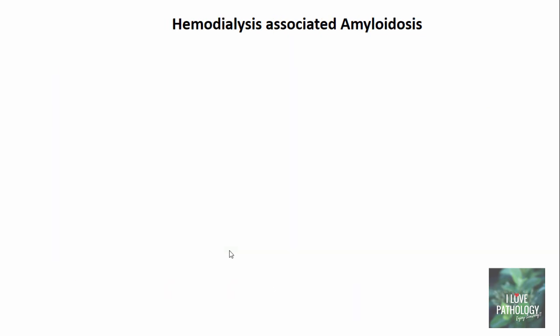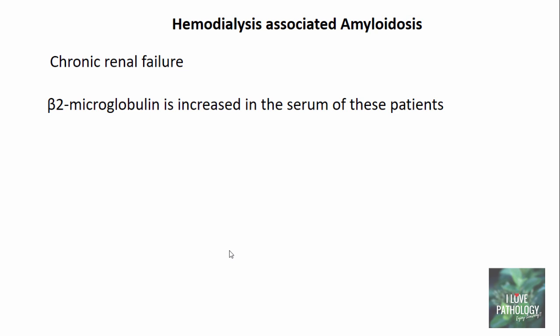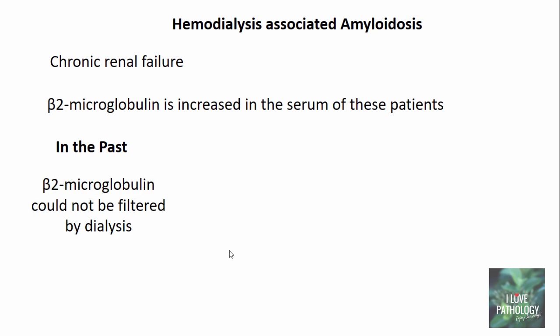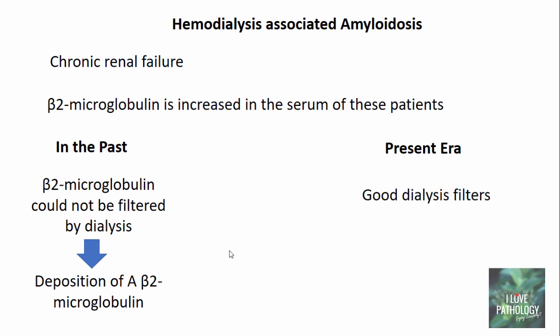Hemodialysis-associated amyloidosis is found in patients with chronic renal failure. In chronic renal failure, beta-2 microglobulin is increased in the serum. In the past, when dialysis filters were not good, beta-2 microglobulin could not be filtered and would accumulate and deposit as A-beta-2-microglobulin. Now, with improved dialysis filters that can filter beta-2 microglobulin, there is a decreased incidence of hemodialysis-associated amyloidosis.